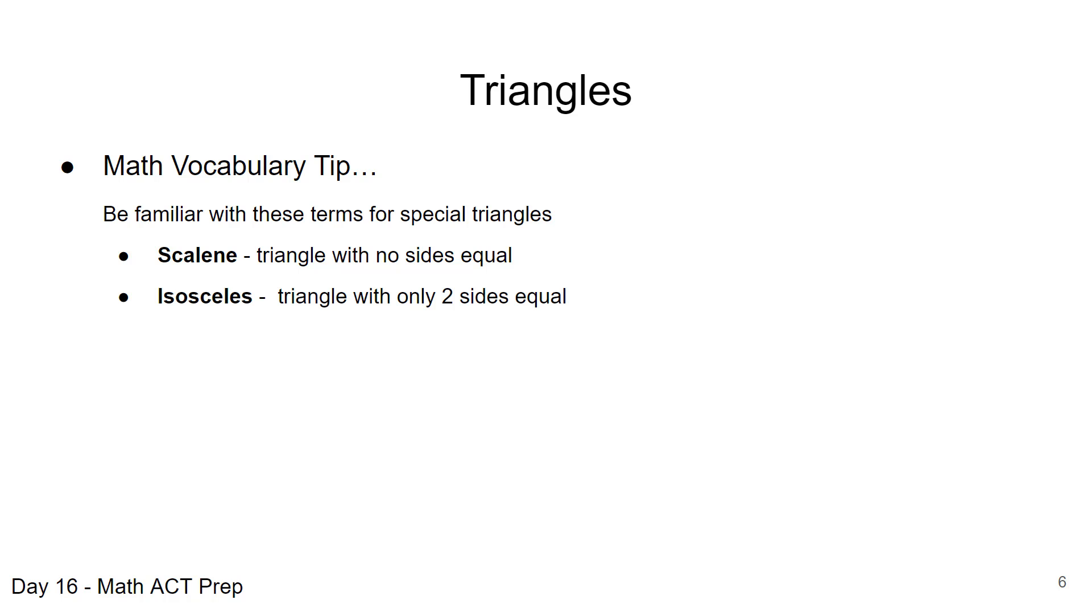When you have triangles with two sides exactly that are equal, that's an isosceles triangle, and an equilateral triangle has all three side lengths equal.